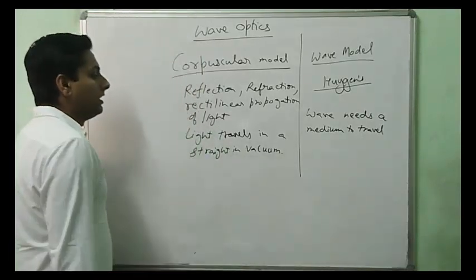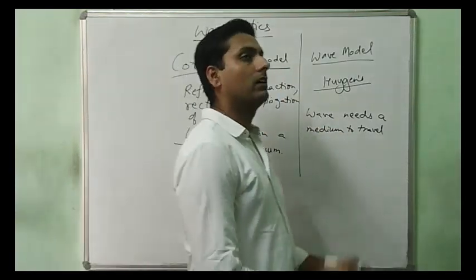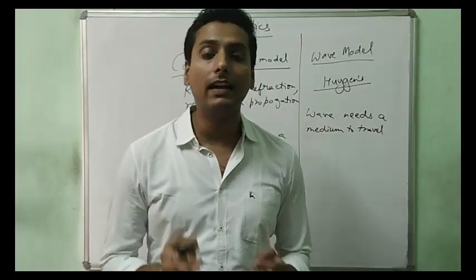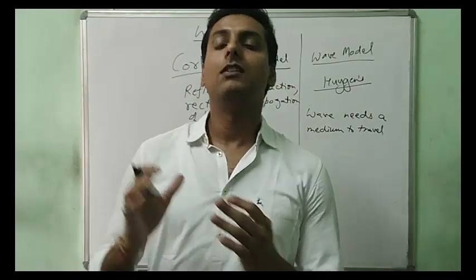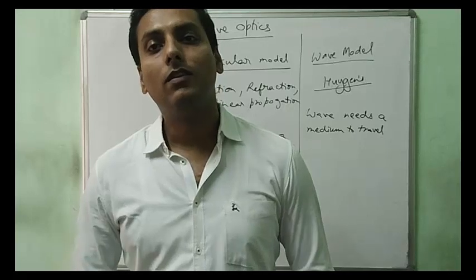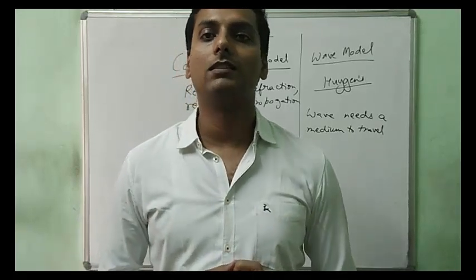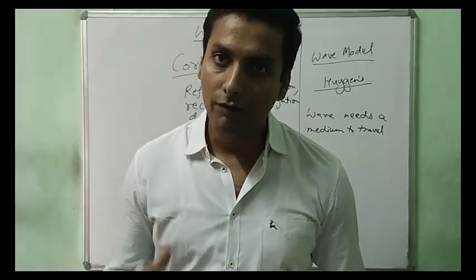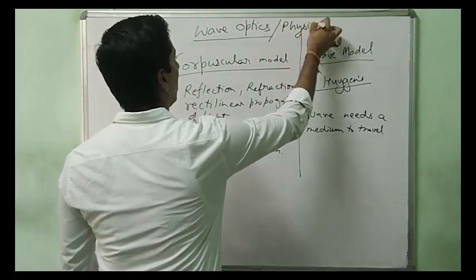Due to Maxwell's theory of electromagnetic waves, it was agreed that some waves can travel without a medium — electromagnetic waves. Therefore, light can also travel in vacuum and in a medium. Hence, light exhibits dual nature: one is particle nature, that is ray optics or geometrical optics, and the other is wave nature, which is wave optics or physical optics.